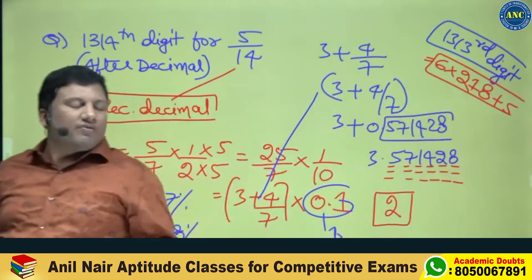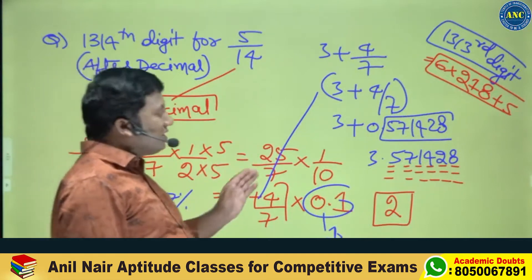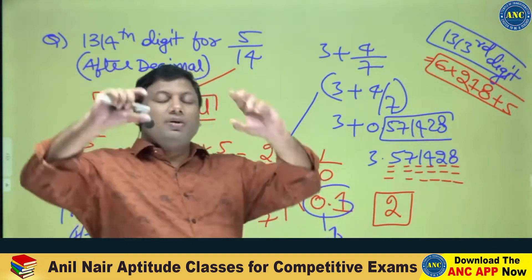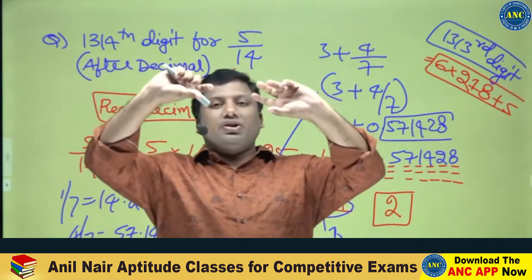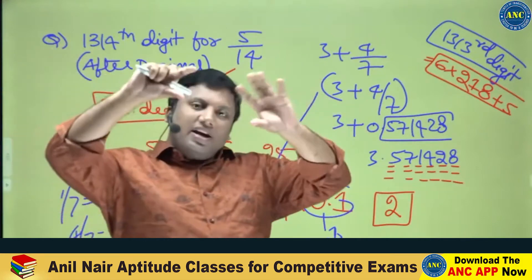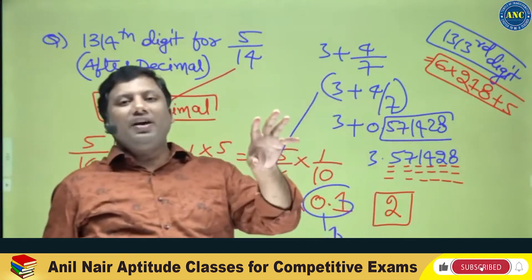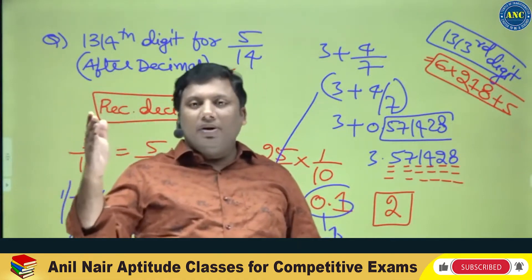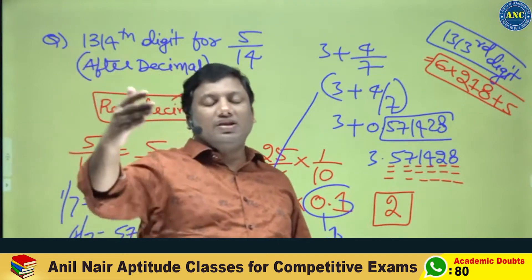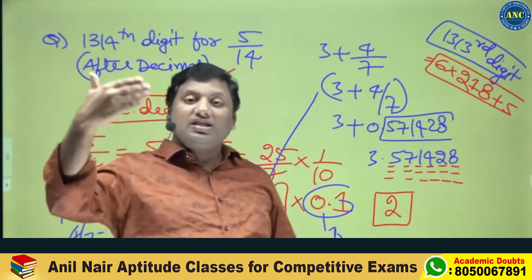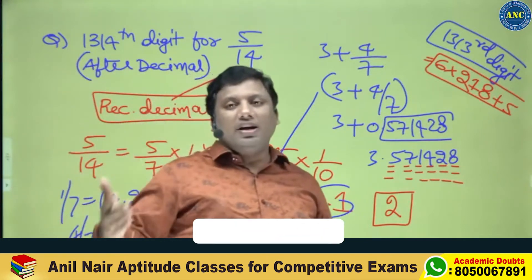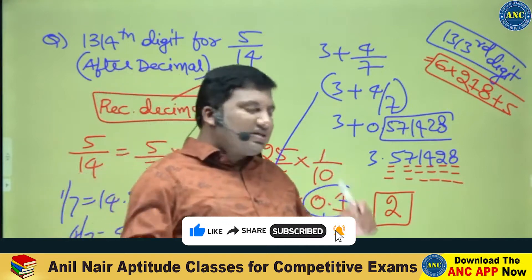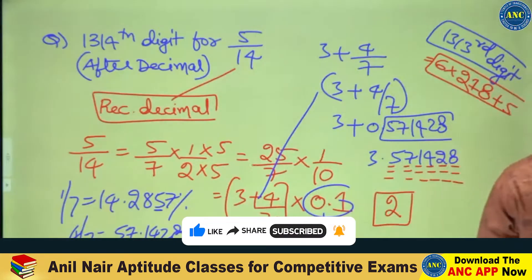Answer it is 2. Most students will not solve this question thinking it's difficult, but actually it's an easy question if you understand the concept. A fraction converts into a terminating decimal only when the denominator is a power of 2, only a power of 5, or powers of 2 and 5. Otherwise it is recurring.